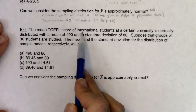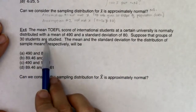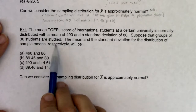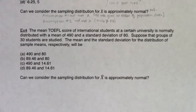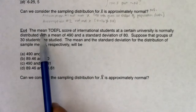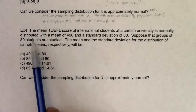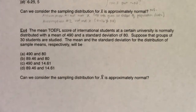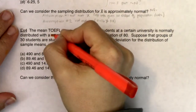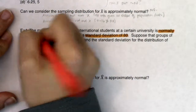Example 4: The mean TOEFL score of international students at a certain university is normally distributed with a mean of 490 and a standard deviation of 80. Suppose that groups of 30 students are studied. The mean and standard deviation for the distribution of sample means respectively will be blank. Let's highlight the buzzwords: mean of 490, standard deviation of 80, normally distributed, groups of 30 students.